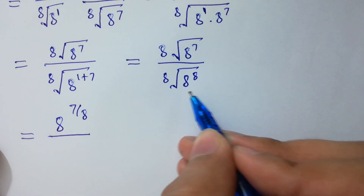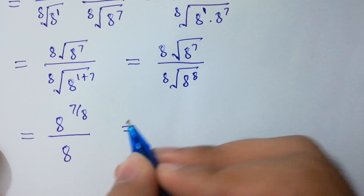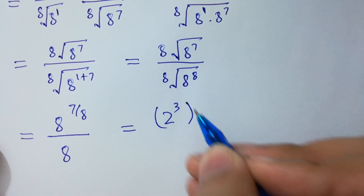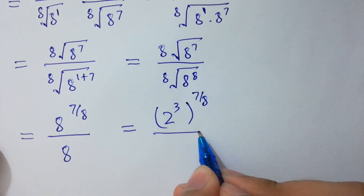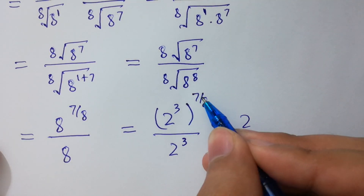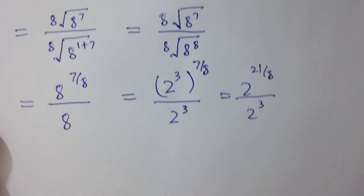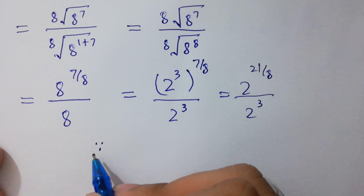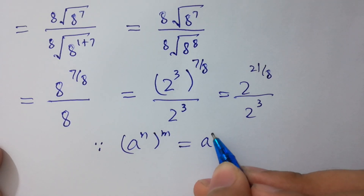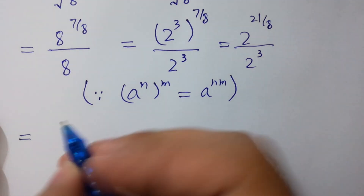In the next step, 8 equals 2 cubed, so 7 over 8 as it is and 8 equals 2 cubed. If we simplify, 7 times 3 equals 21 over 8, divided by 2 cubed. Since a to the power n, to the whole power m, equals a to the power n times m, we can proceed to the next step.